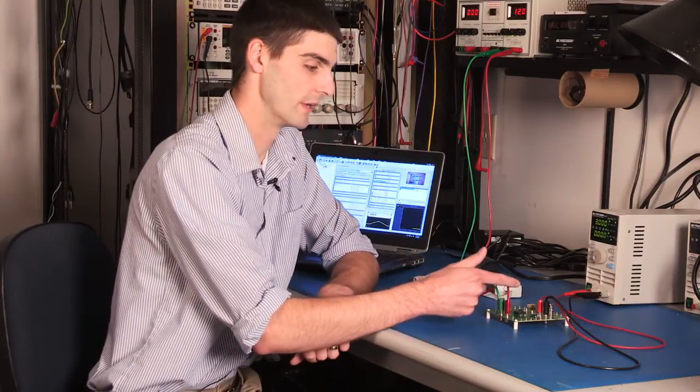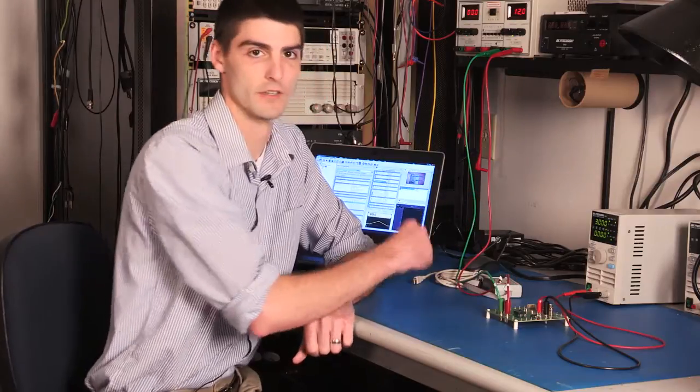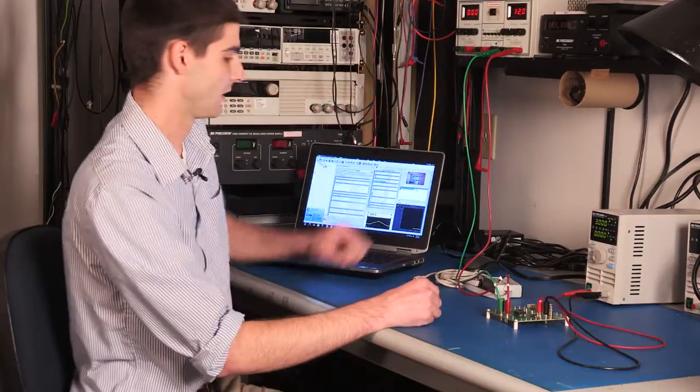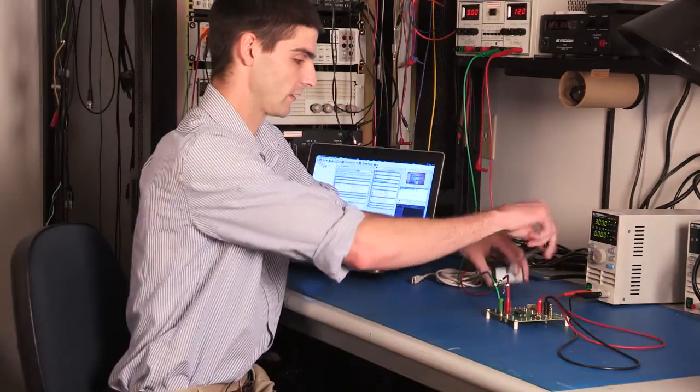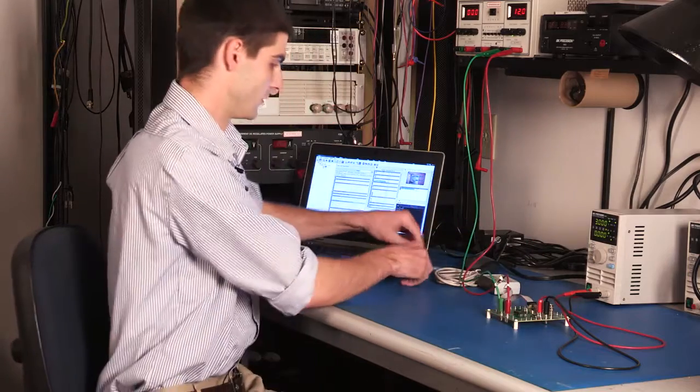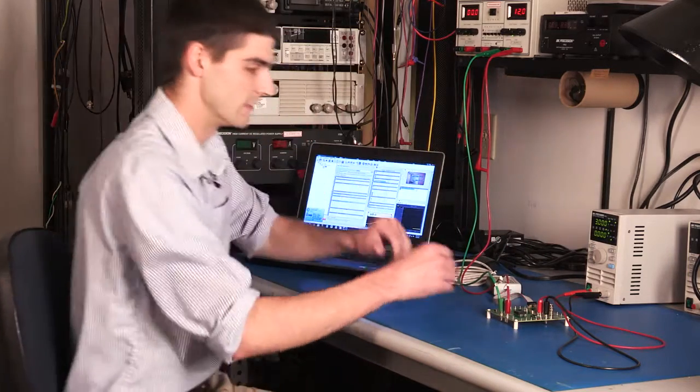I have one of the regulator outputs connected to the electronic load, which will allow us to draw a constant current from the regulator, and we can go ahead and connect the PMBUS controller to the module and to the PC.